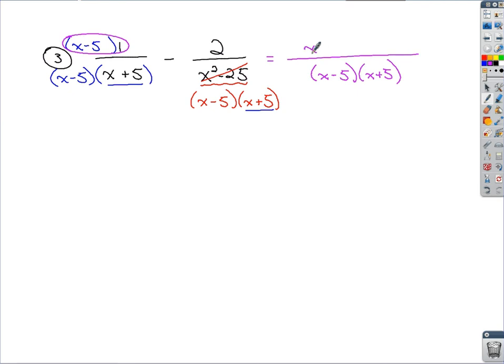Obviously, I'd have x minus 5. And then I'm subtracting this 2. No adjustments were necessary to that numerator since we had our least common denominator already down here.